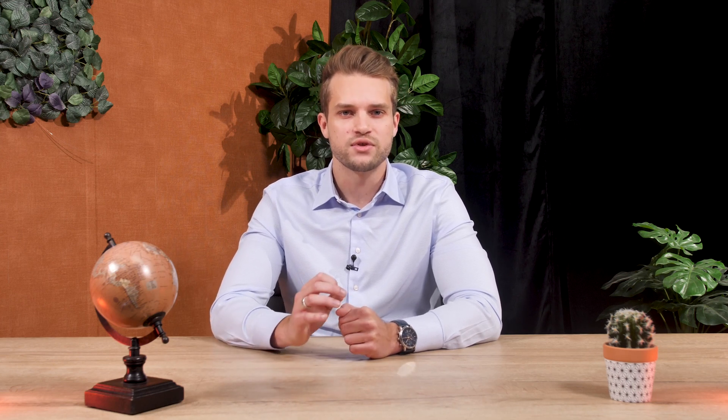We have seen how demand planning serves as an input for DRP, and how DRP serves as an input for MPS. Subsequently, we have seen how RCCP can be used to negotiate changes to the MPS in order to achieve a realistic supply plan.